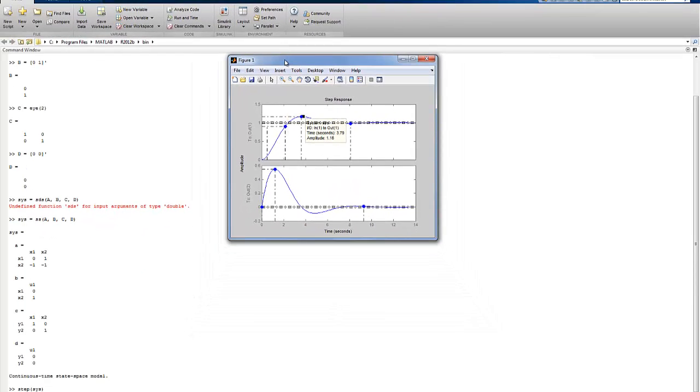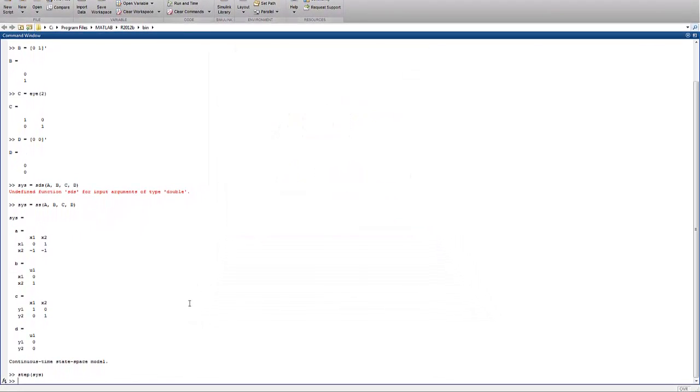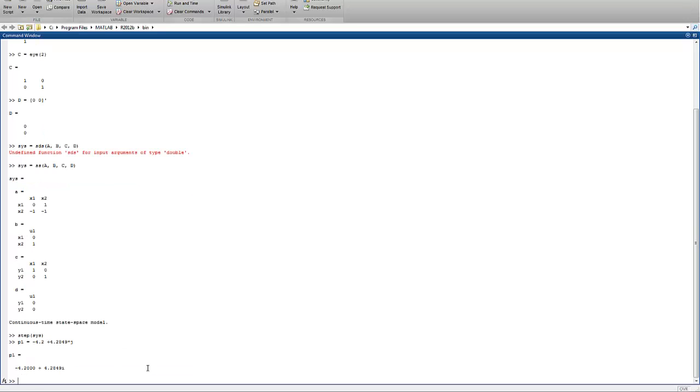If we want to find gains to meet our performance criteria, we can do that. We know that P1 has to be minus 4.2 plus 4.2849 times j, and P2 needs to be minus 4.2 minus 4.2849 times j.